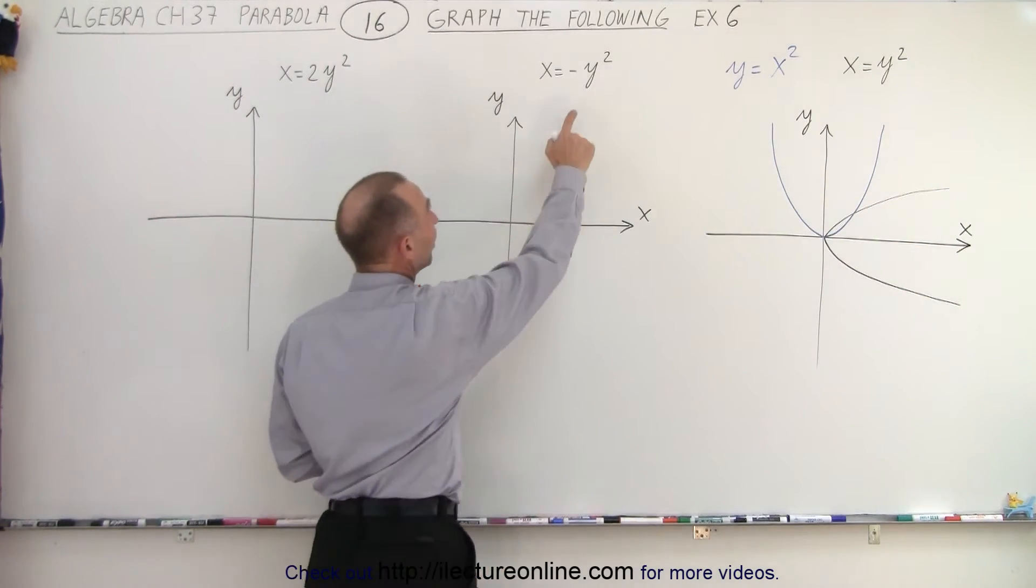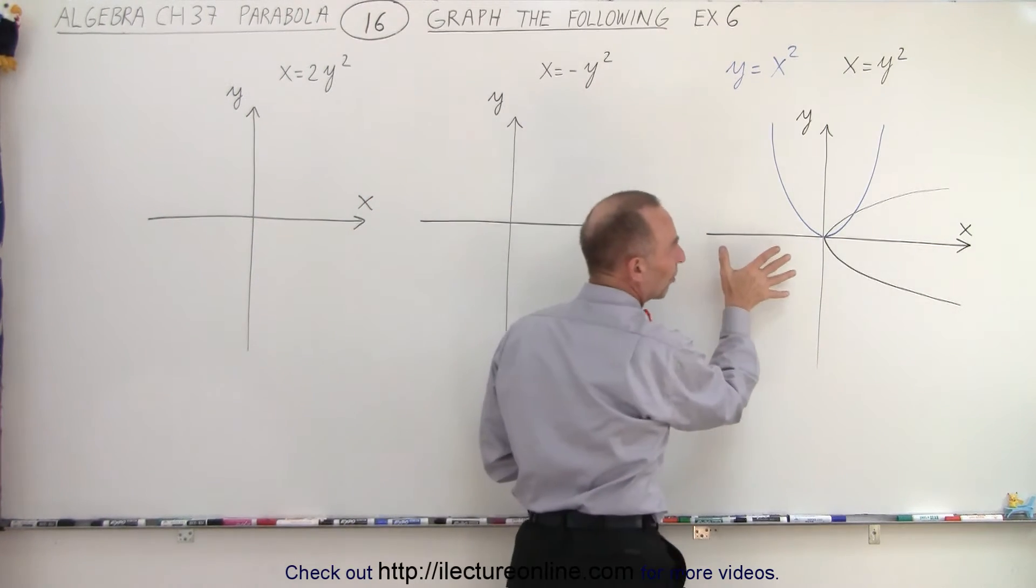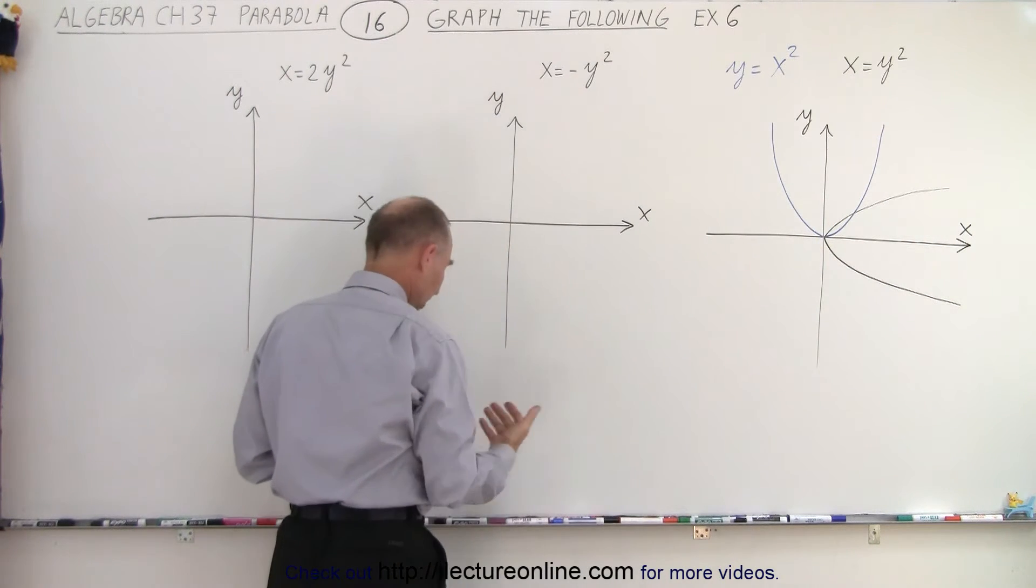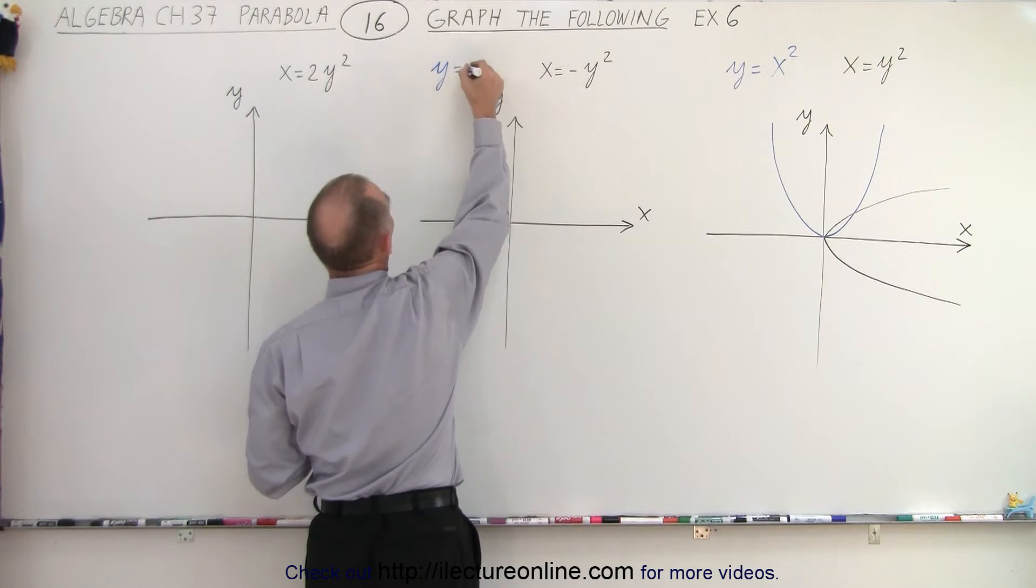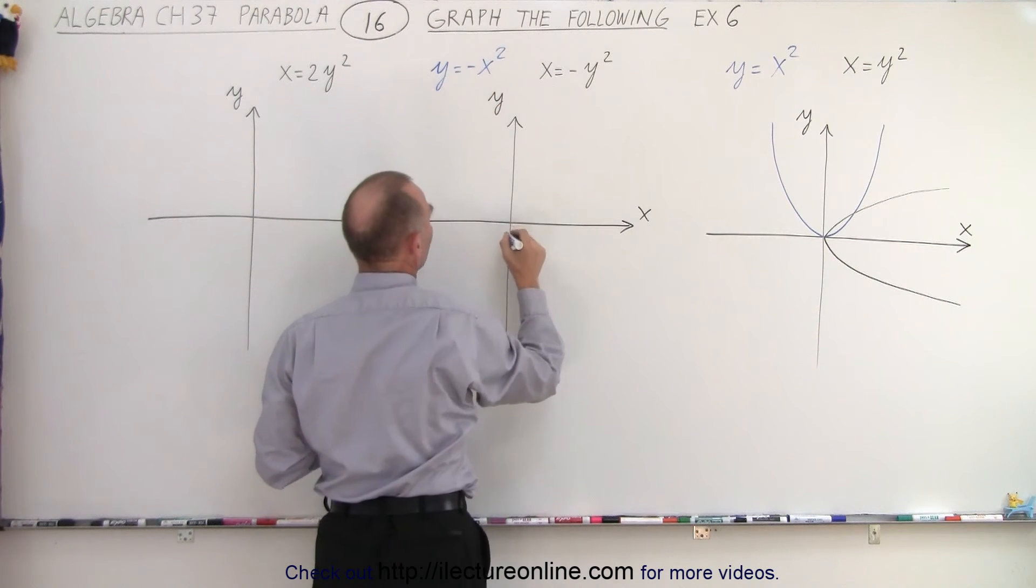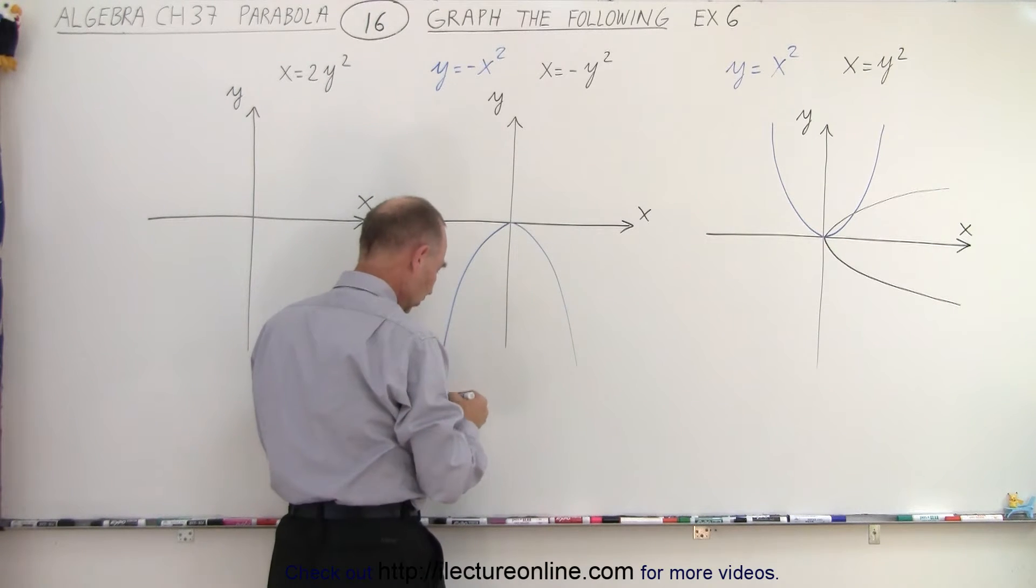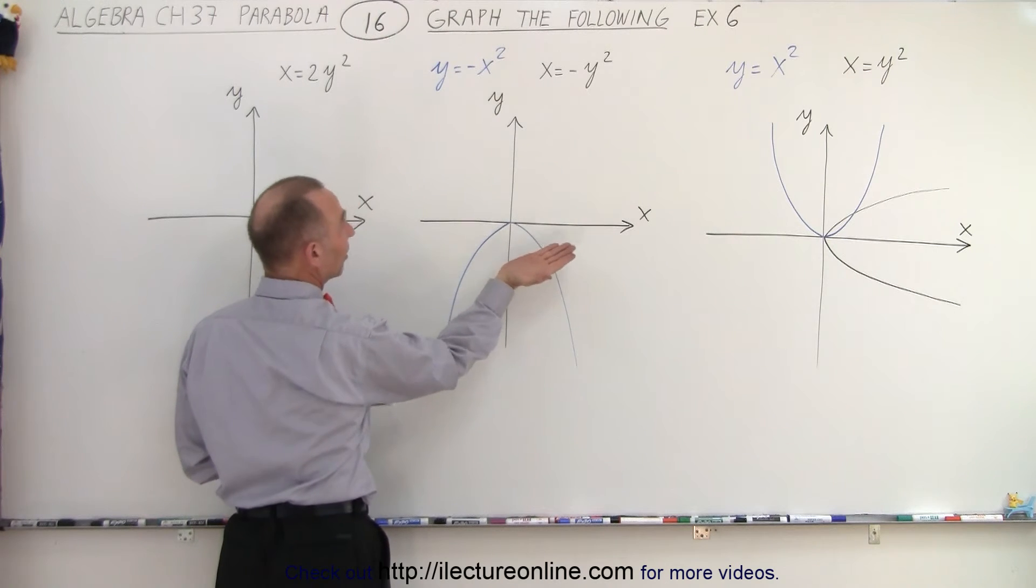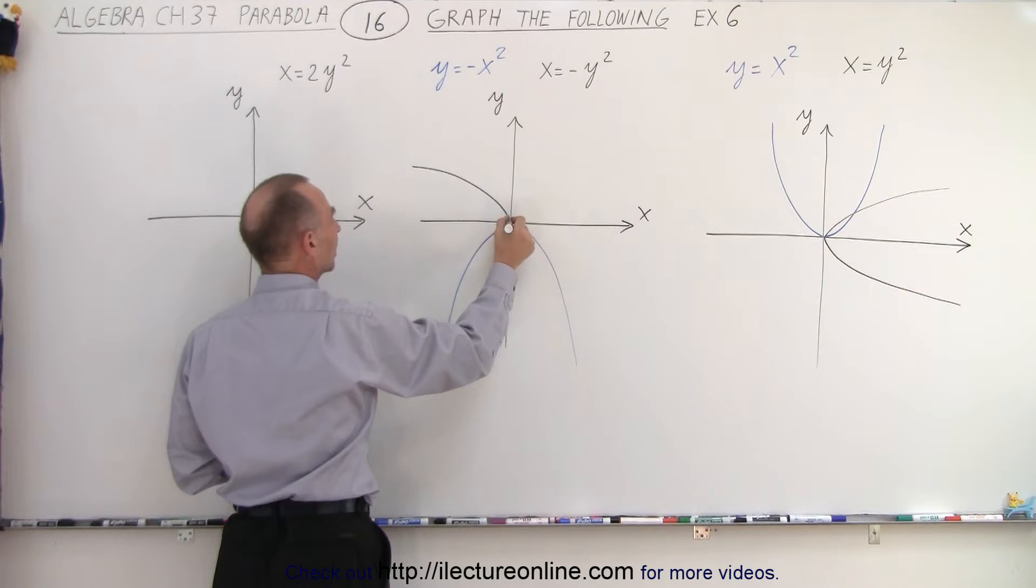If it's a negative y squared instead of a positive y squared, then instead of opening towards the positive x-axis, it will open towards the negative x-axis. So for comparison, you've had y equals negative x squared. That would be graphed like this. And we have x equals negative y squared. It simply flips it over towards the other direction and it's going to look like this.